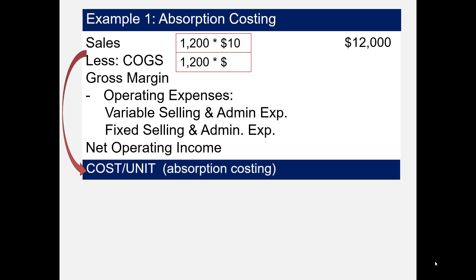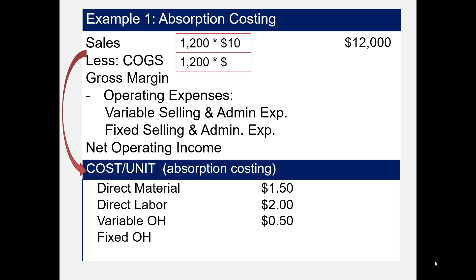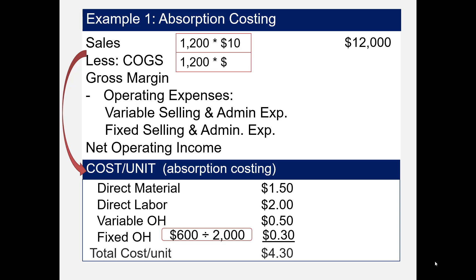Under absorption costing, the cost per unit includes direct material $1.50, direct labor $2, variable overhead $0.50, and fixed overhead. Fixed overhead is given in total for the month, so we compute the per unit amount by taking $600 divided by 2,000 units, which is $0.30 per unit. The total cost per unit is $4.30.